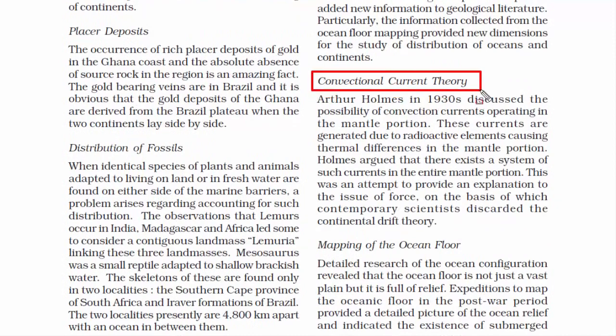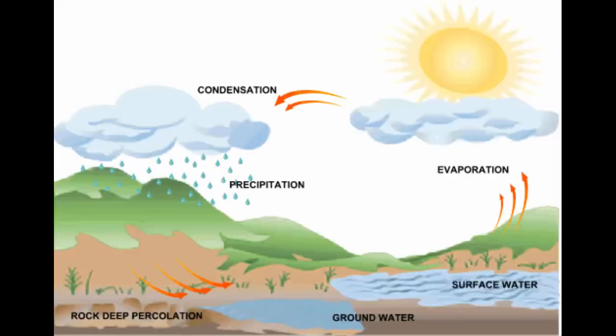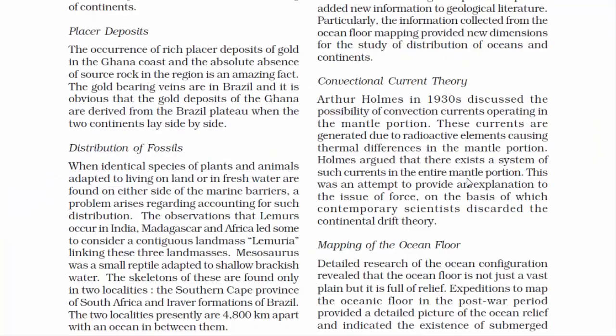The first new finding is the Convectional Current Theory. Convection is the circular motion that happens when warmer air or liquid, which has faster moving molecules making it less dense, rises while the cooler air or liquid drops down. This is similar to how rainfall occurs: warm air rises holding moisture, and when it cools and condenses, the moisture breaks into liquid molecules and falls down as rain.